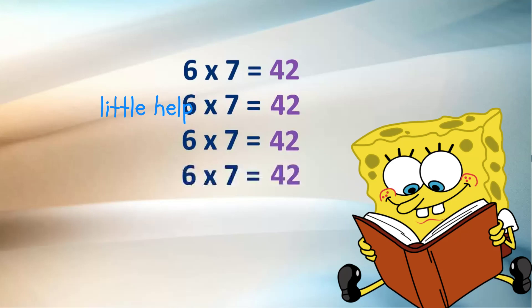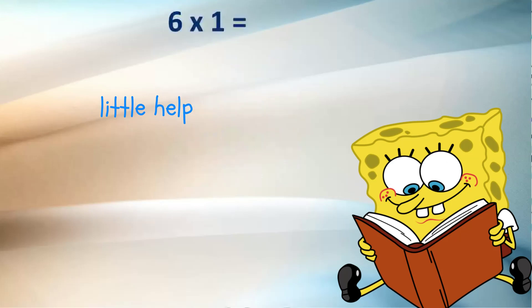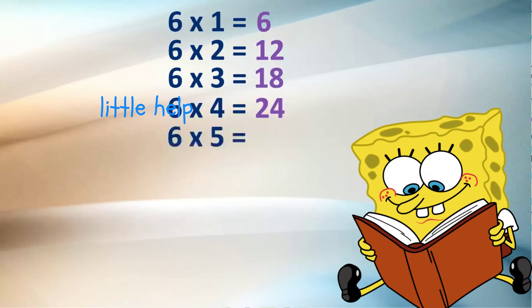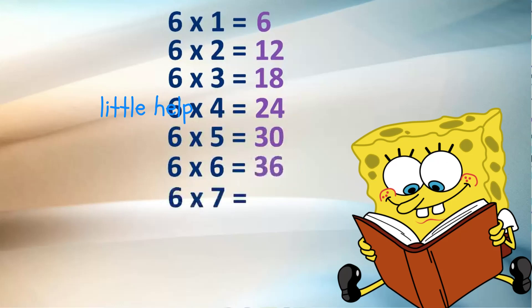6 ones are 6, 6 twos are 12, 6 threes are 18, 6 fours are 24, 6 fives are 30, 6 sixes are 36, 6 sevens are 42.